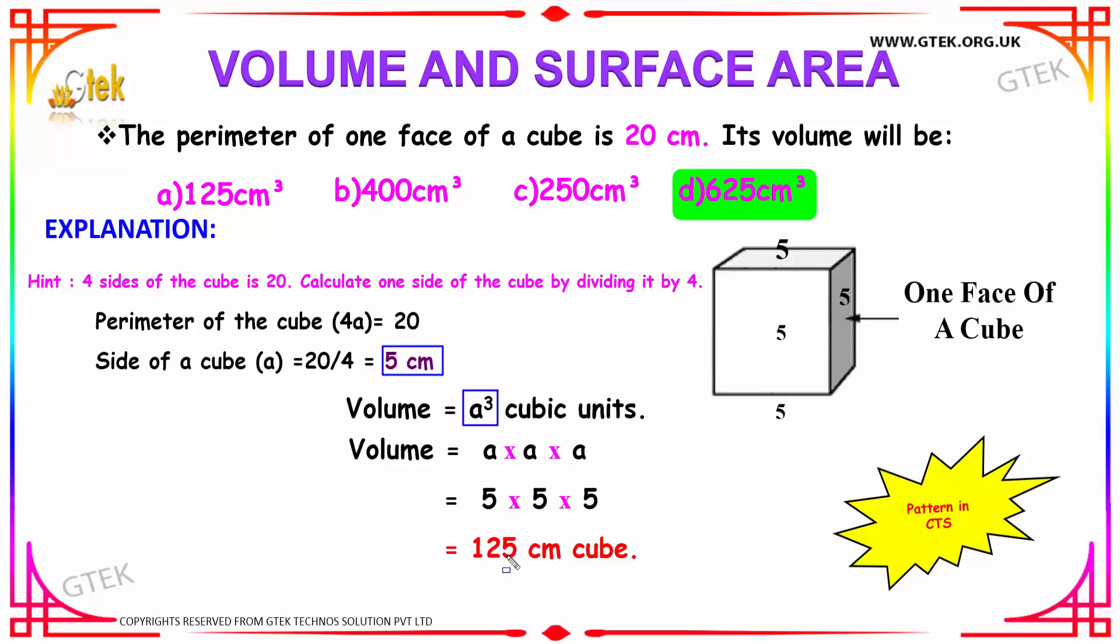That is 5 × 5 × 5, which is equal to 125 cm³. That is option D. Well, we have to take note that this has appeared once in CDS.